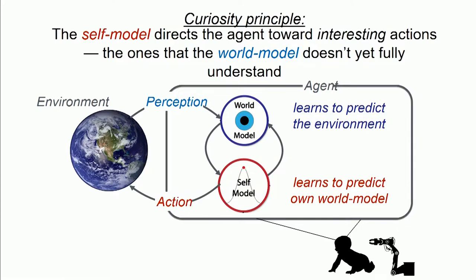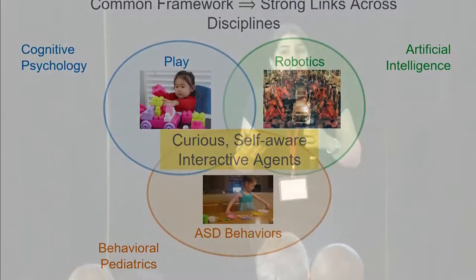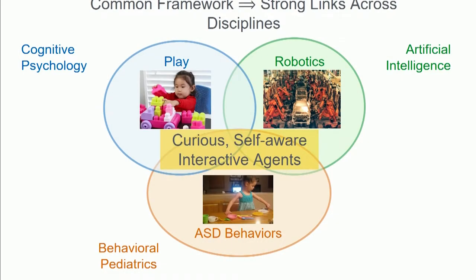Through the world model and self model and the driving force between them, we define what we call the curiosity principle: the self model can direct the agent toward interesting tasks that the world model doesn't yet understand. In other words, self-awareness slowly challenges the agent toward more and more interesting situations, creating a virtuous perception-action loop. That loop gives rise to learning, and with that learning, we can lead to even more informed curiosity. The central glue bringing this interdisciplinary research together is the curious, self-aware, interactive agent.